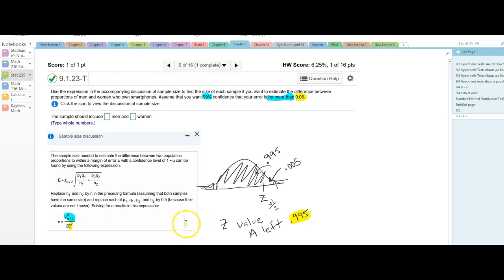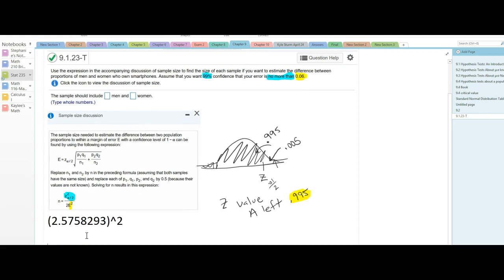That Z value is going to be plugged into this equation for this Z squared. So I'm going to end up plugging this Z squared, and then I'm going to divide that by my 2E squared.